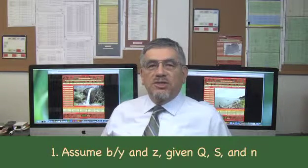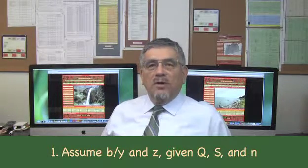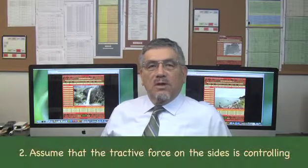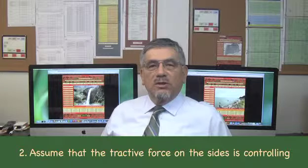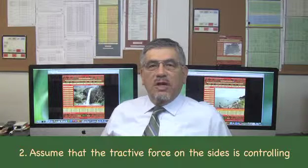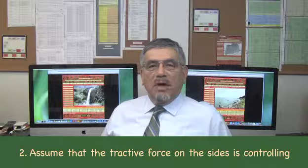The steps in the application of the tractive force method are the following. Step 1: Assume B over Y and Z, given Q, S, and N. Step 2: Assume that the tractive force on the sides is controlling the design, which is the case when the material is the same on both sides and bottom.